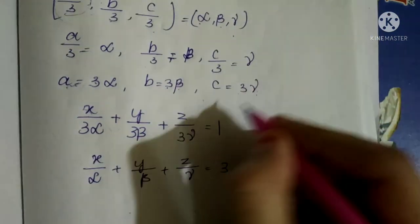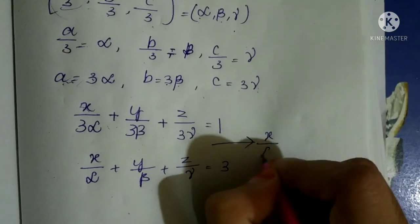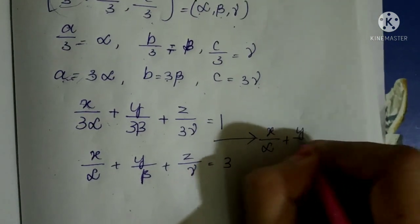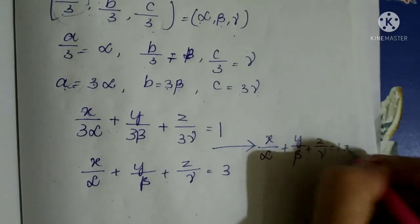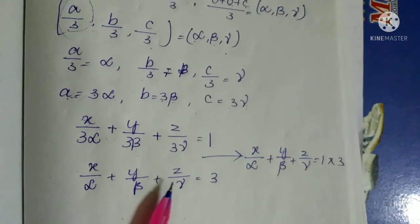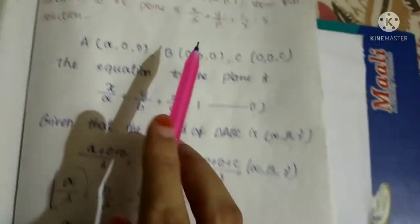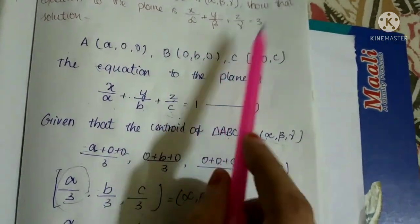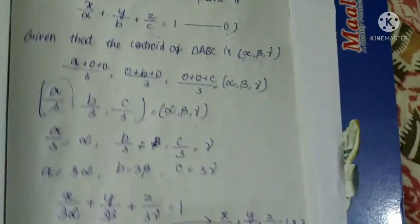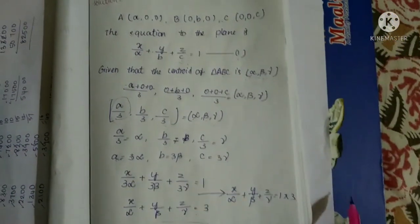Since 1 × 3 = 3, we have proved that x/α + y/β + z/γ = 3. That is how we solved this question. Screenshot this result.